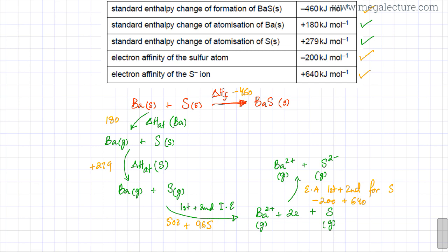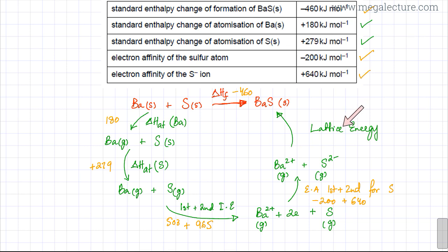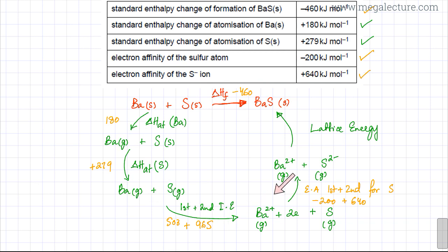The last step is the lattice enthalpy — the unknown value to be found. Lattice energy is when gaseous ions come together to form one mole of ionic lattice. All other enthalpy changes are known except for lattice energy. Applying Hess's law — the enthalpy changes of one path equal those of the other path — the enthalpy of formation (−460 kJ/mol) must equal the sum of all enthalpy changes along the other path.